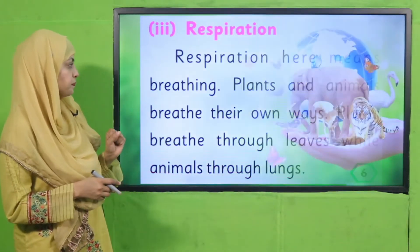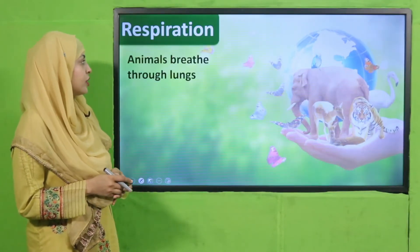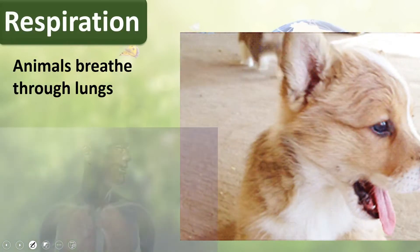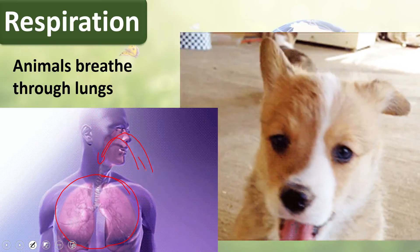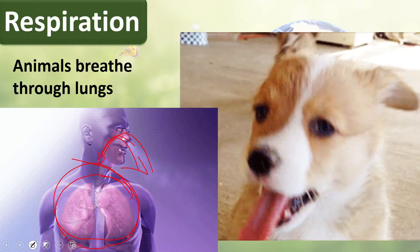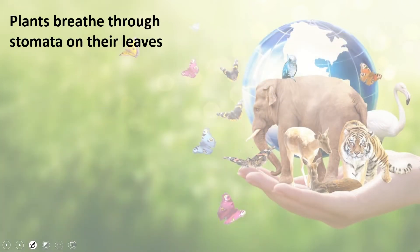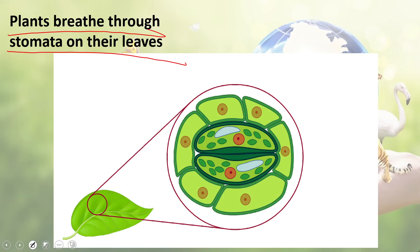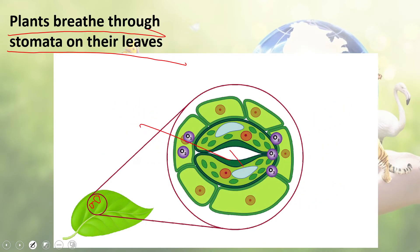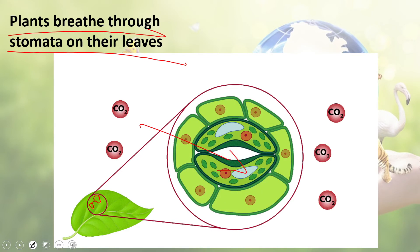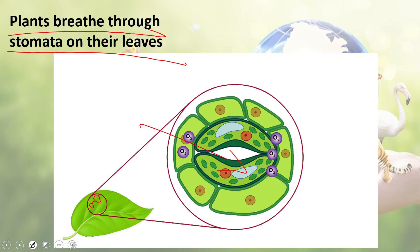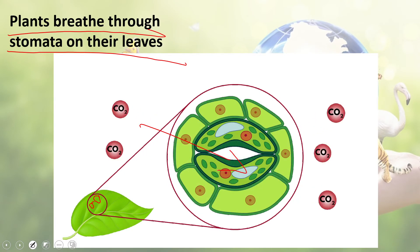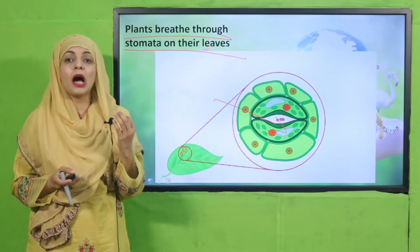Animals breathe through lungs — the gas exchange process in animals happens through the lungs. Air goes in from the nose into the lungs, and then gas is taken out. Plants breathe through stomata on their leaves. The stomata are on the leaves — small holes that you cannot see with the naked eye. Gas exchange happens through these stomata. Plants take in carbon dioxide and release oxygen through the stomata on their leaves.